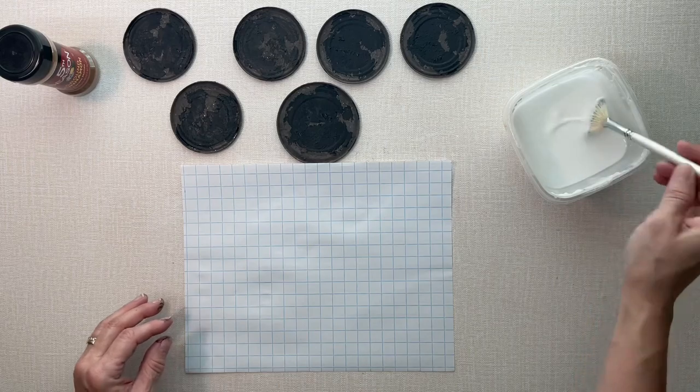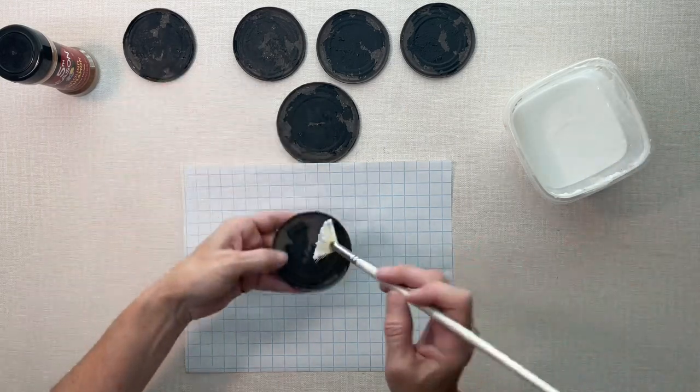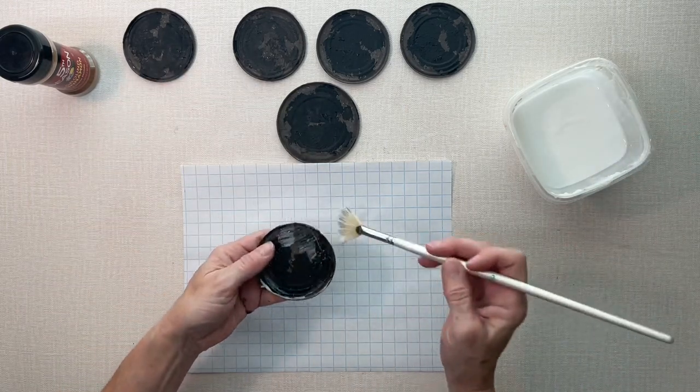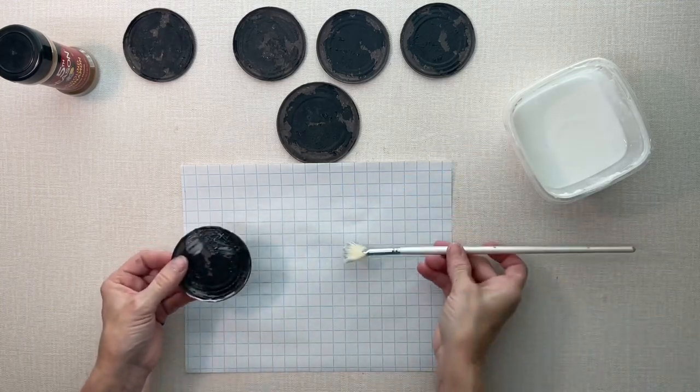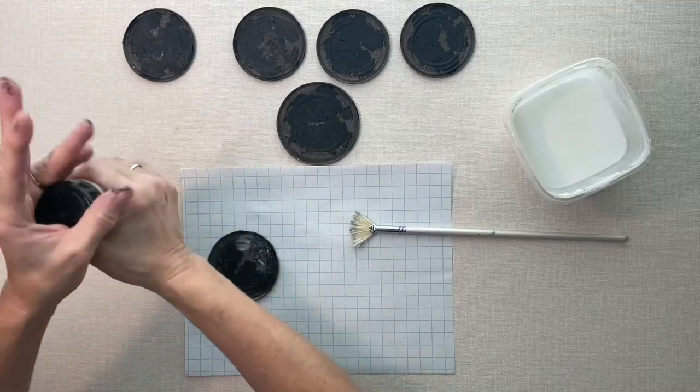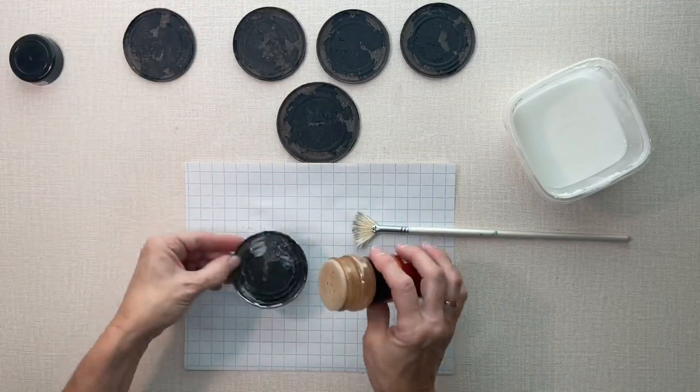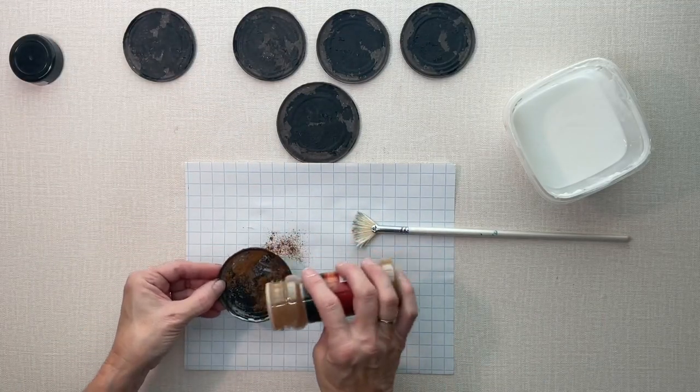Now that that's dry, I'm going to take a glue and water mixture and just very haphazardly brush this on. Then I'm going to take ground cinnamon and sprinkle it on, and that will give me that rusty look.